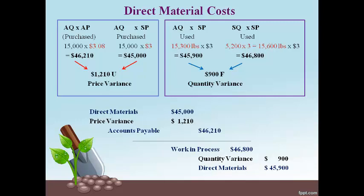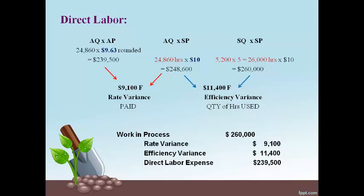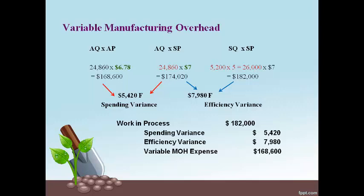Unfavorable variances are recorded with a debit and favorable variances are recorded with a credit. Direct labor is moved to work in process with a debit at the standard cost. The credit is recorded for the actual amount. The rate and efficiency variances are recorded for the difference. Variable manufacturing overhead costs incurred are moved to work in process with a debit at the standard cost. The credit is always recorded for the actual amount. The spending and efficiency variances are recorded for the difference in actual and estimated amounts. Favorable variances are recorded with a credit.